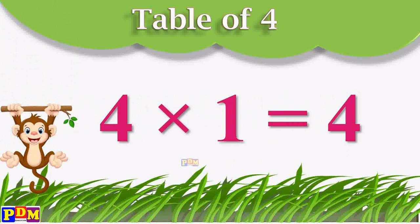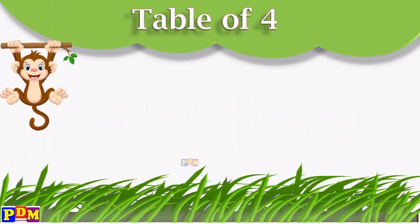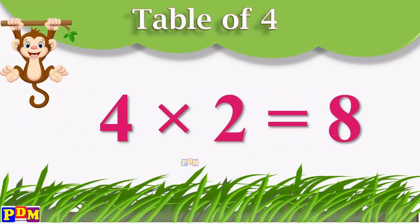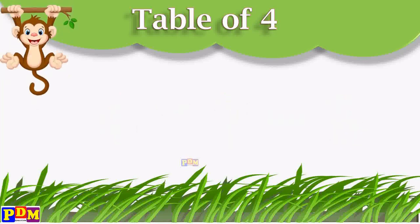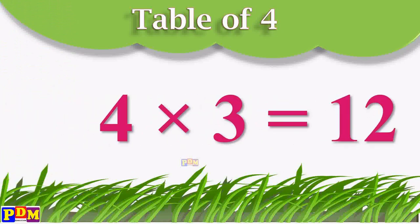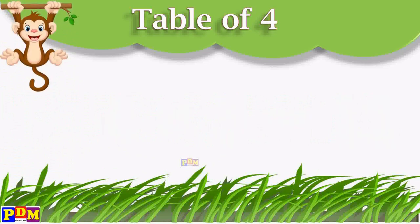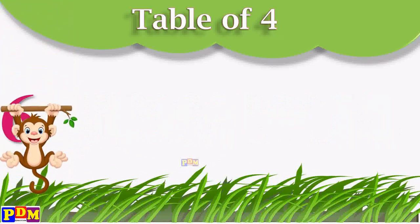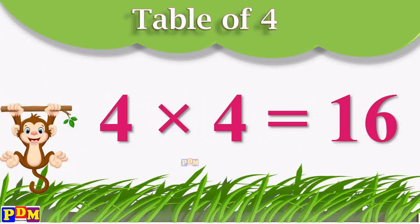Four ones are four. Four twos are eight. Four threes are twelve. Four fours are sixteen.